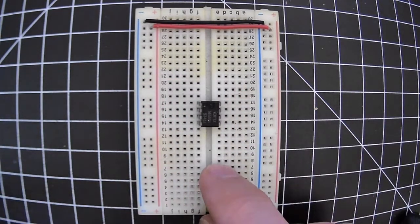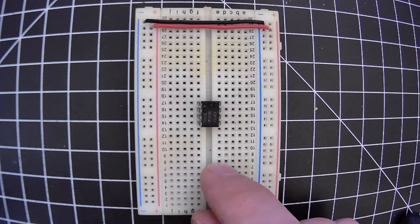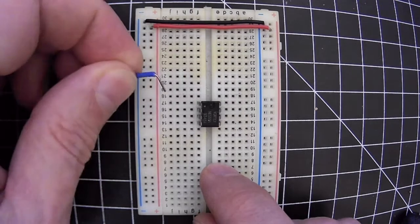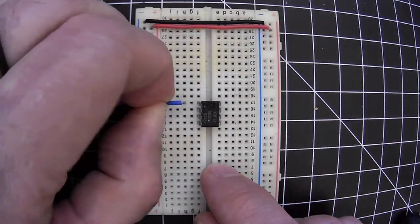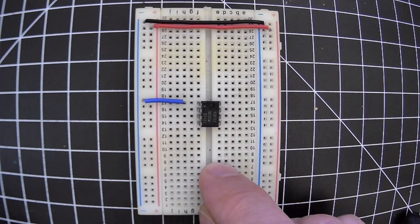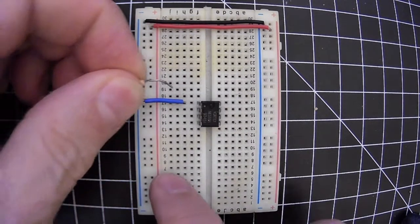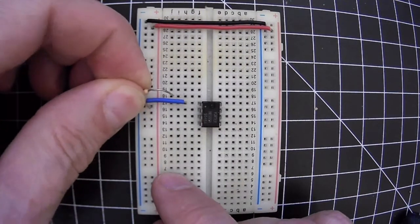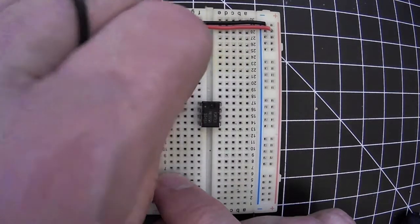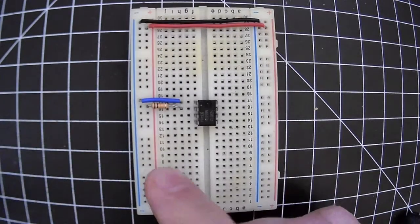Making sure that we make all the connections that we need to that are indicated by the schematic. Pin 1 we see is connected to ground, so the first step would be just to connect pin 1 to the blue rail. Then pin 2 we see is going two different places. One of the places is that it goes through a 10k resistor to power.